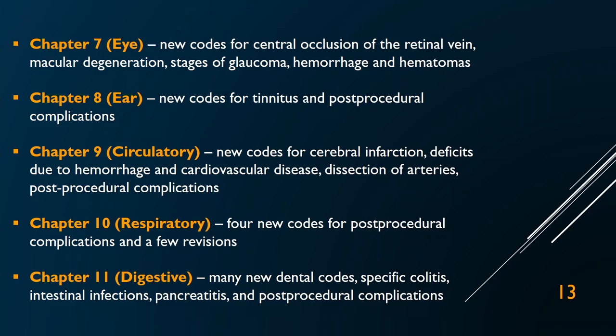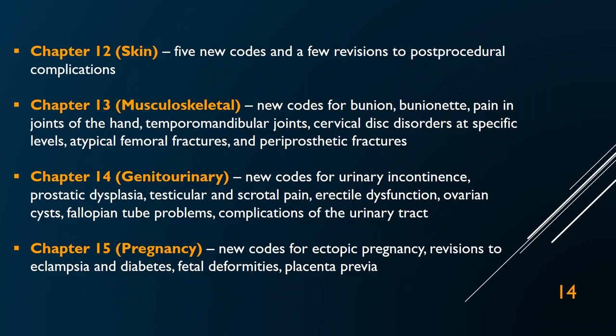Chapter 12 covers the skin. If you work in dermatology, there are five new codes and a few revisions to post-procedural complications — not a big deal, but find out what those five new codes are. Chapter 13 is your musculoskeletal disorders and has a lot of changes. They added codes for bunions and bunionettes, new codes for pain in joints of the hand, laterality codes for temporomandibular joints (right, left, and bilateral), more specificity for cervical disc disorder levels, and updates to fracture codes — mostly pathological fractures.